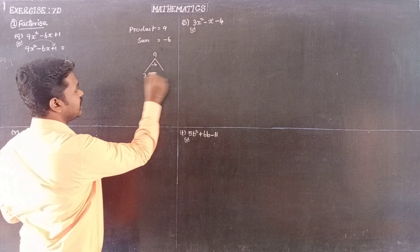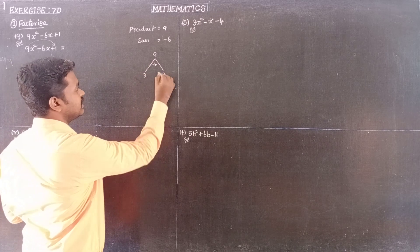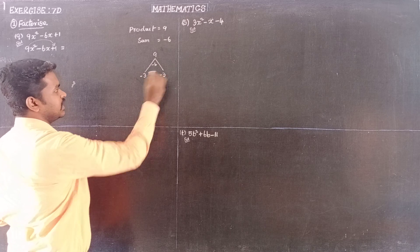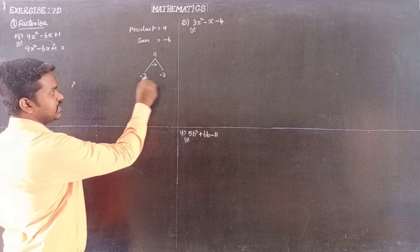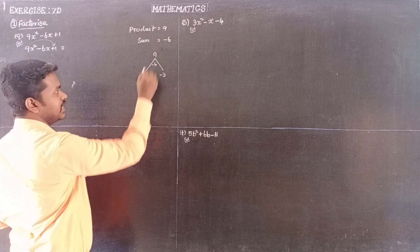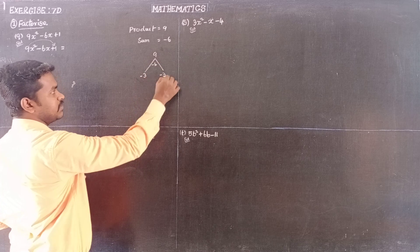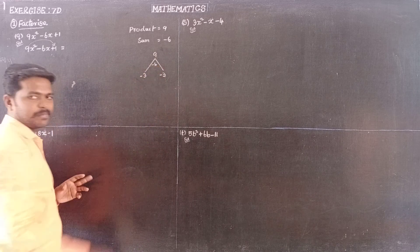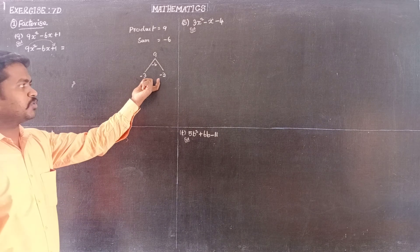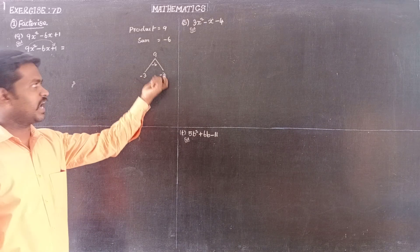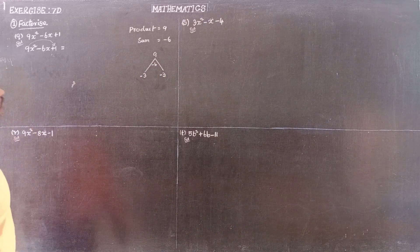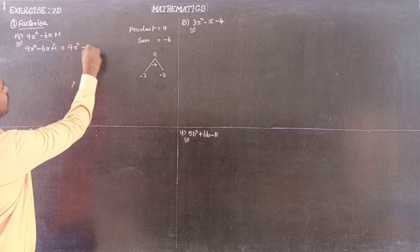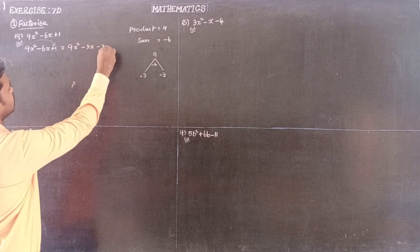The numbers are minus 3 and minus 3. Because minus 3 times minus 3 is plus 9, and minus 3 plus minus 3 equals minus 6. So we split the middle term into minus 3x and minus 3x.